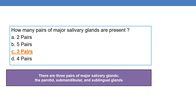How many pairs of major salivary glands are present? There are three pairs of major salivary glands — the option is C. They are the parotid gland, submandibular gland, and sublingual gland. That is two parotid glands, two submandibular glands, and two sublingual glands — total three pairs.